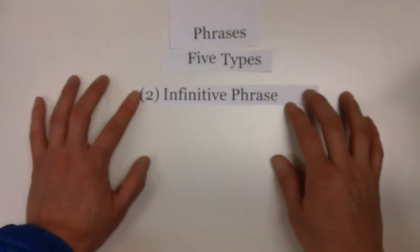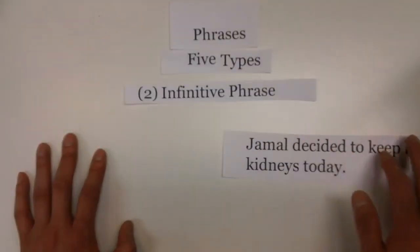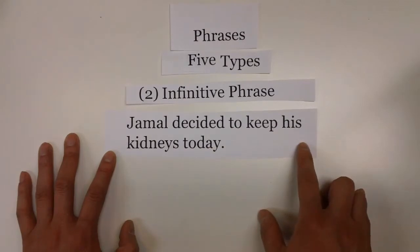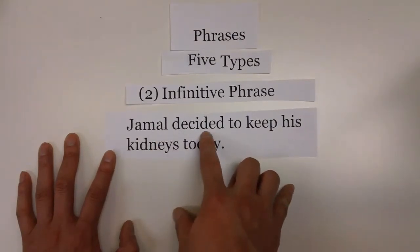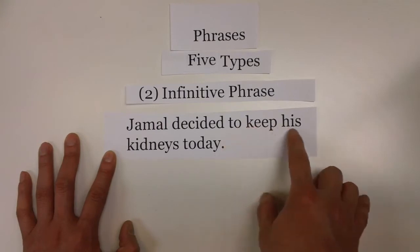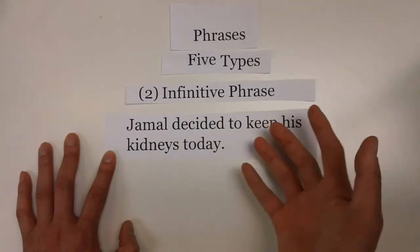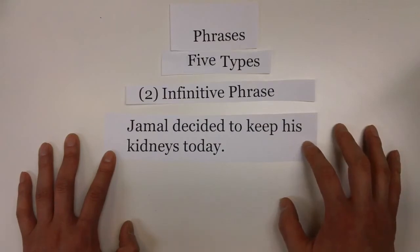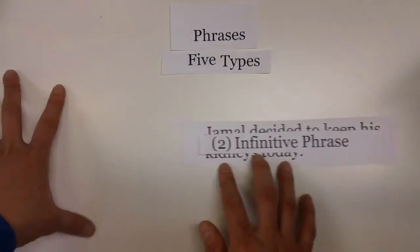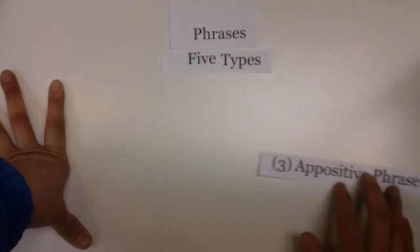The second type is called an infinitive phrase — a phrase that consists of an infinitive form of a verb. In the sentence "Jamal decided to keep his kidneys today," Jamal is the subject, decided is the verb, and "to keep his kidneys today" is the infinitive phrase. It's good to know infinitive phrases as a form of verb you can use to construct a sentence and to vary your essay writing.